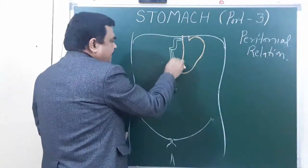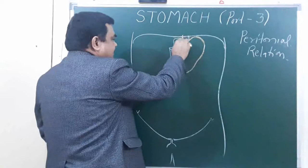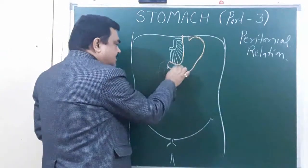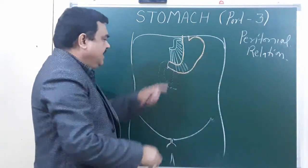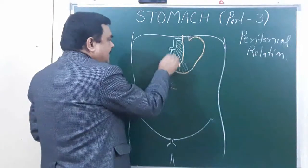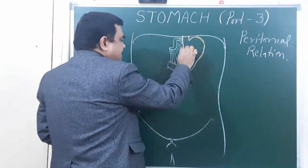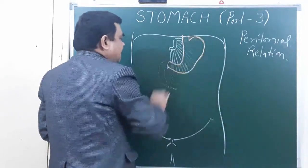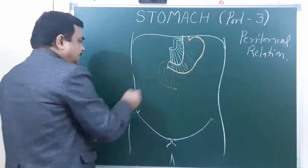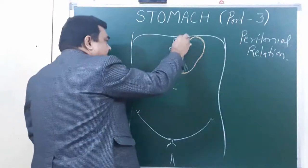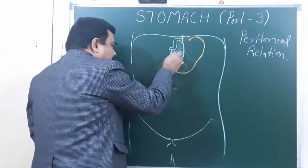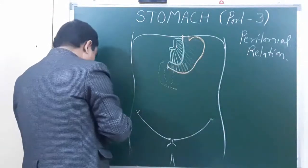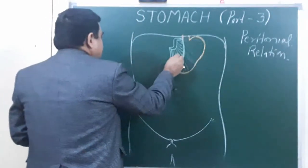On the lesser curvature, the lesser omentum is attached. As you can see, the lesser omentum has two layers — the anterior layer covers the anterior surface of the stomach and the posterior layer covers the posterior surface. It is attached along the margin on the right side of the lesser curvature.